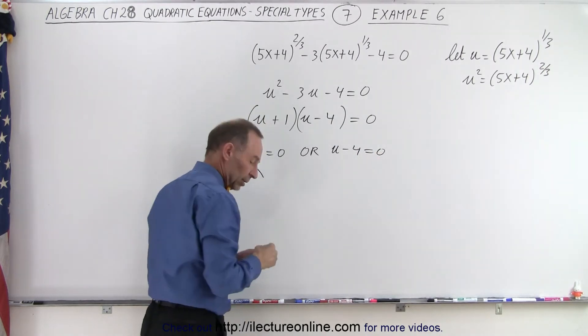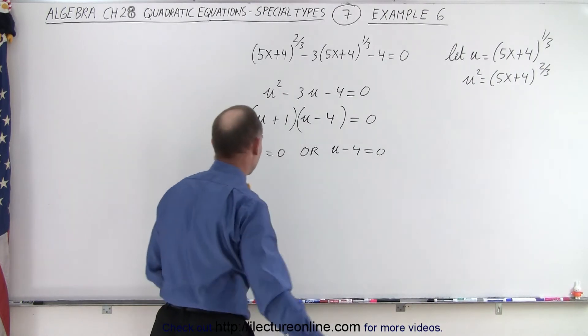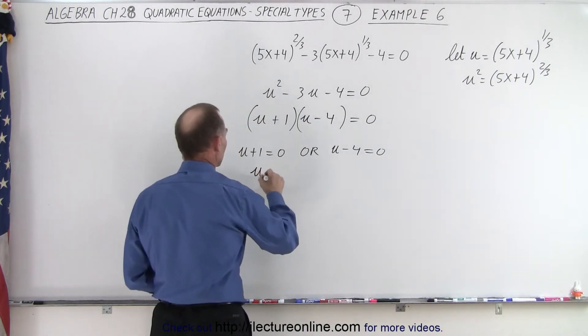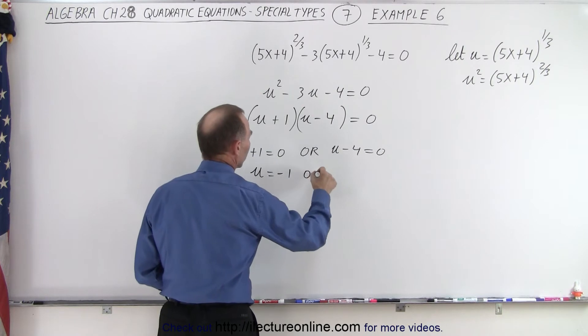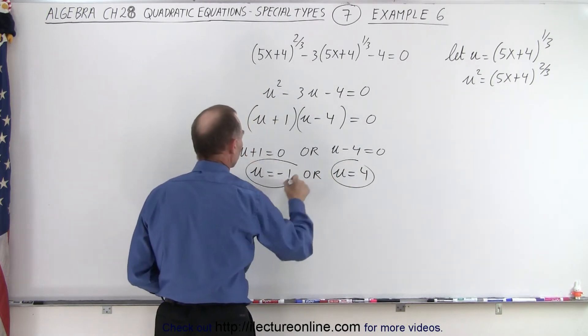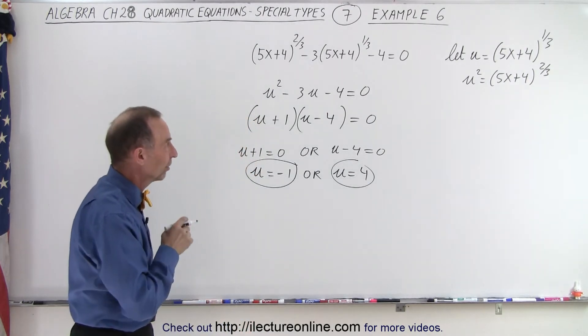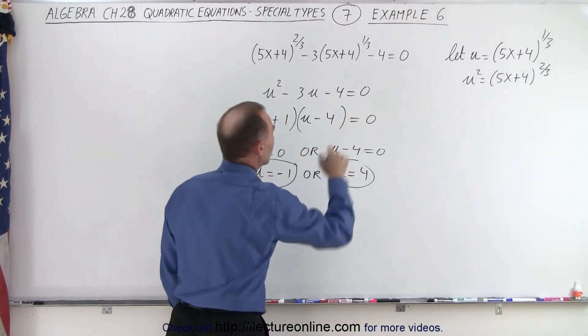Here we get u equals negative 1 or u equals 4. So two possible solutions for u. But we're not looking for u. We're looking for x. So we're going to re-substitute what u is equal to.